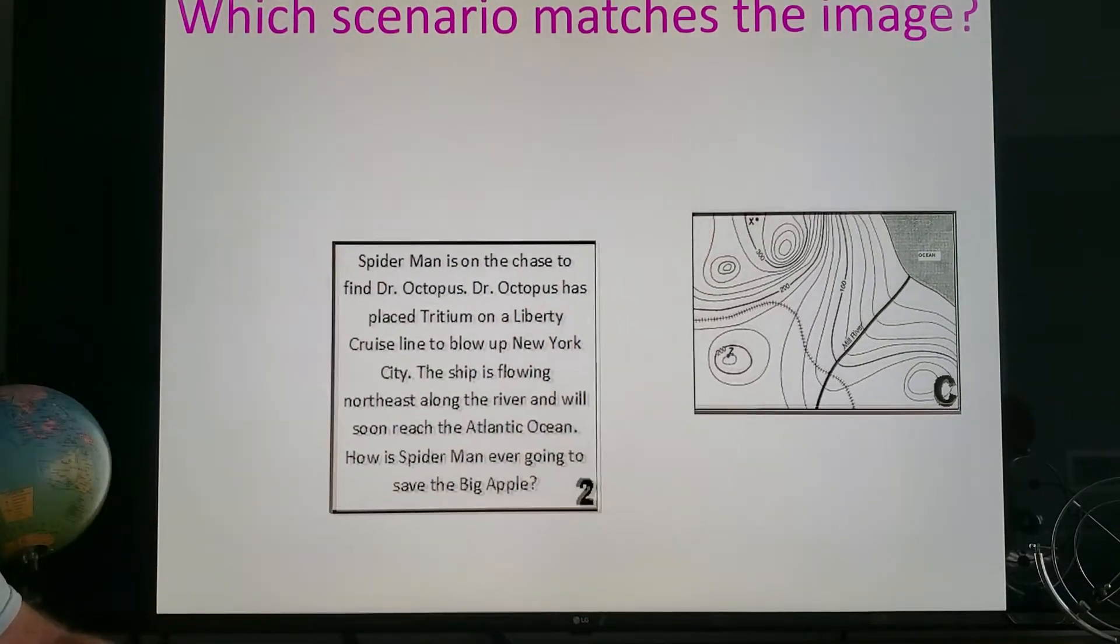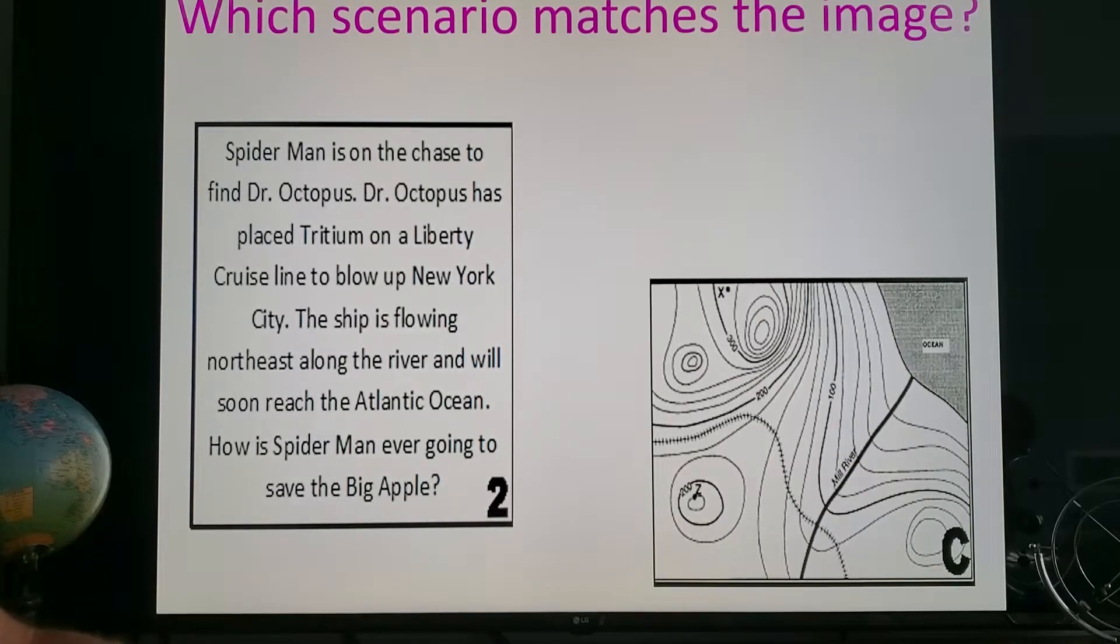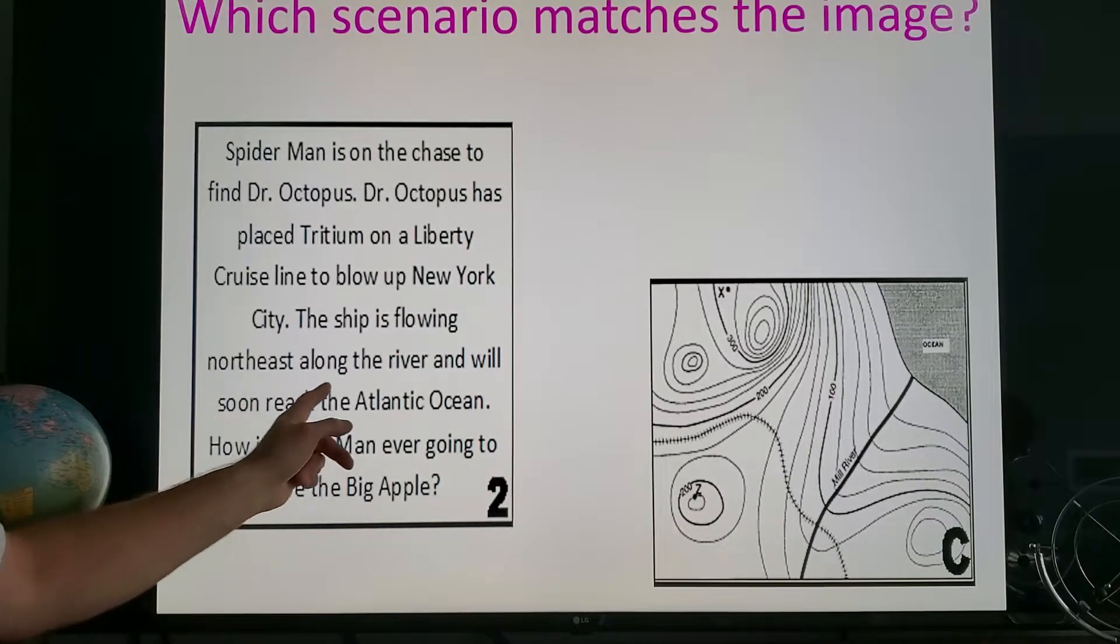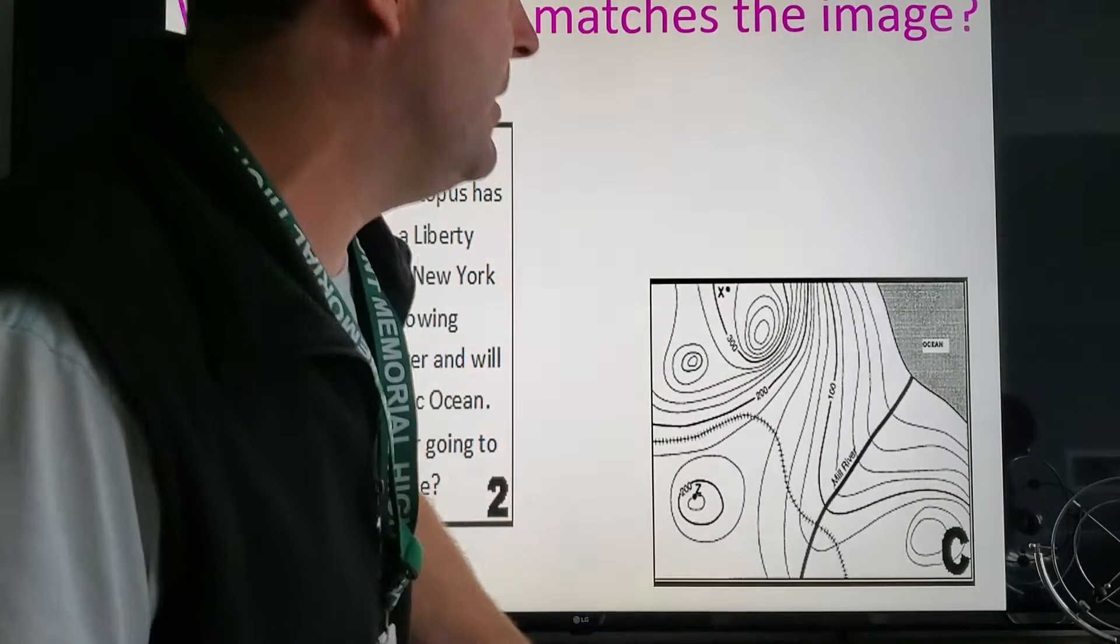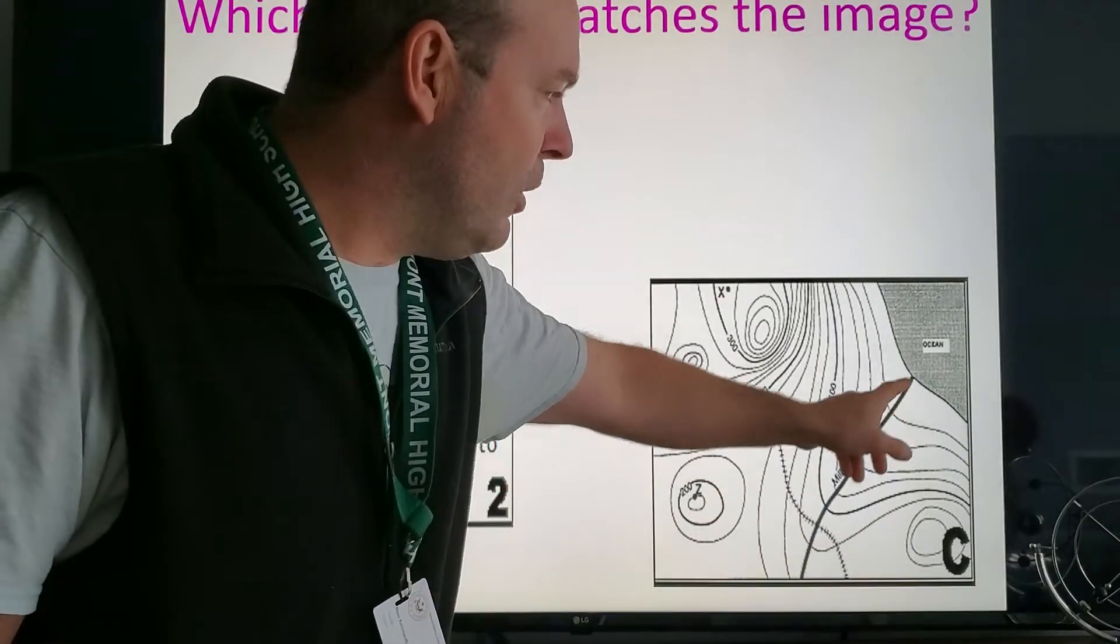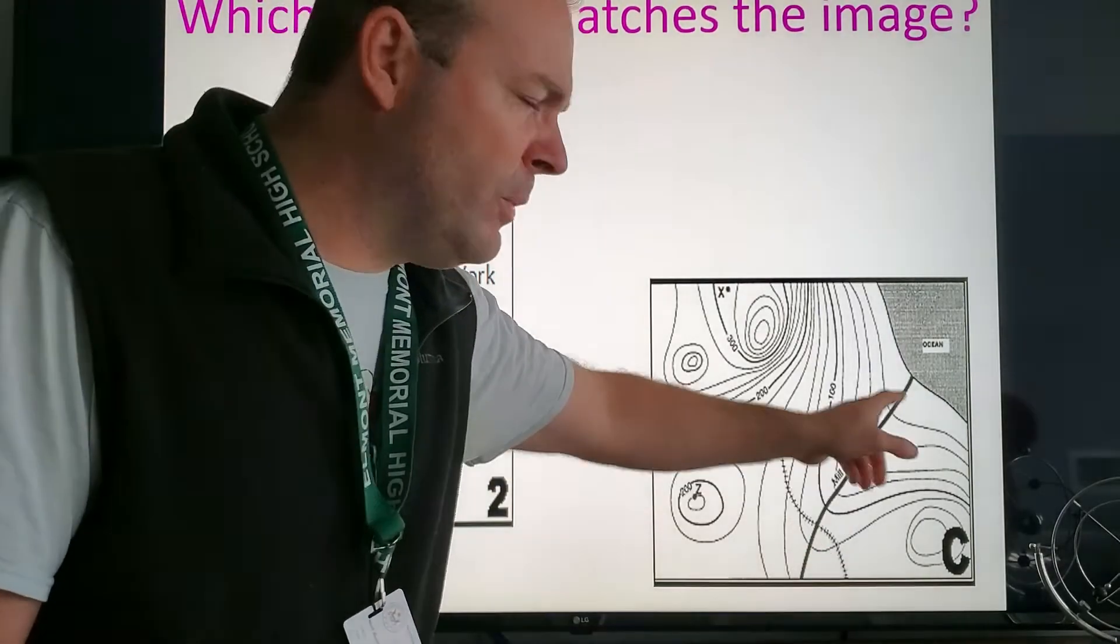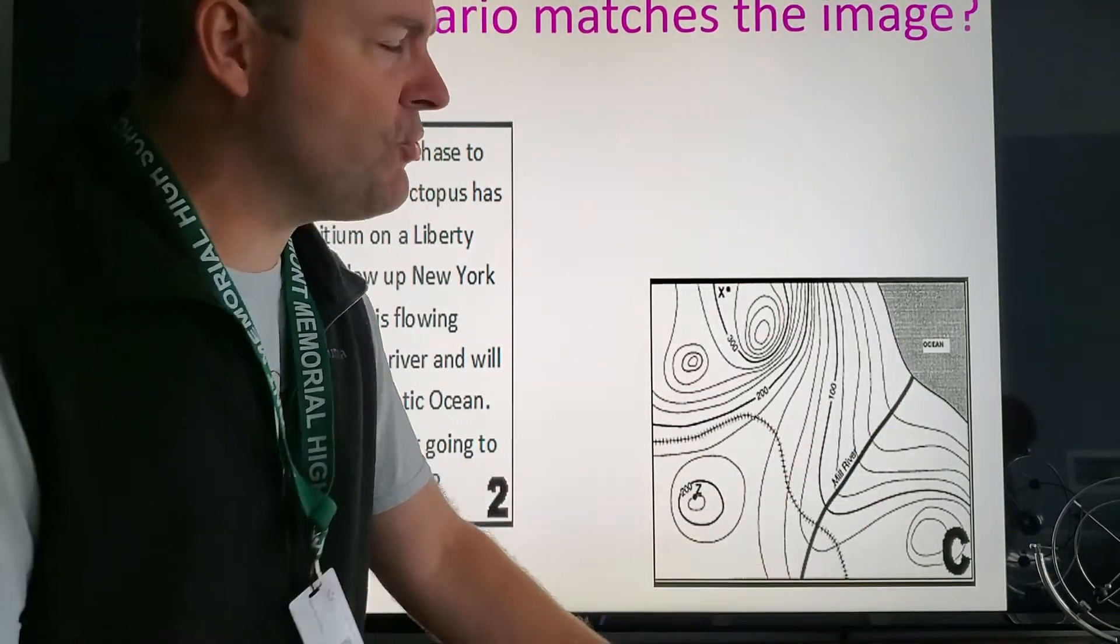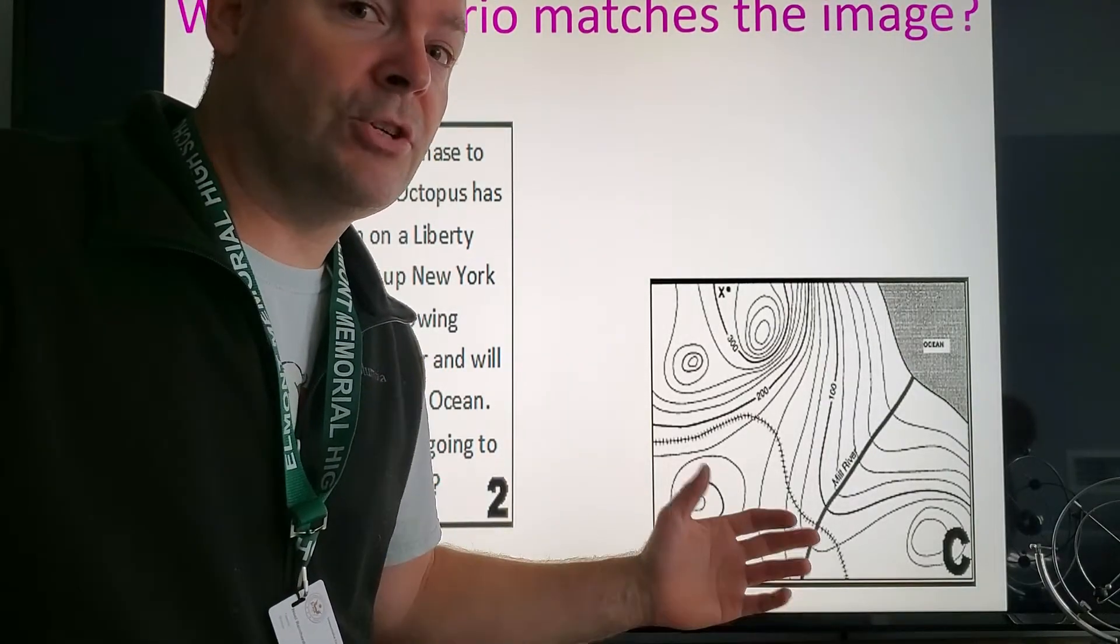Which of course leaves the last one there, Spider-Man looking for Doctor Octopus who placed the tritium on a Liberty cruise line to blow up New York City. The ship is flowing northeast along the river and will soon reach the Atlantic Ocean. How is Spider-Man going to save the Big Apple? Well it had to be this map because first of all it was the only map with an ocean.